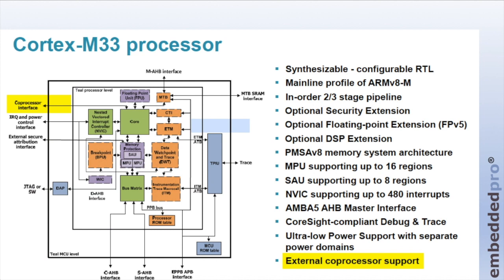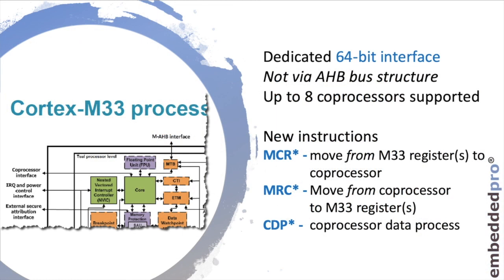Here's a block diagram for the Cortex-M33 processor from ARM. It shows as a feature the external coprocessor support. This coprocessor interface is a dedicated 64-bit interface, meaning the core can access a coprocessor without going through the AHB bus interface — the crossbar — and so isn't subject to prioritization with other bus masters. The architecture supports up to eight coprocessors.